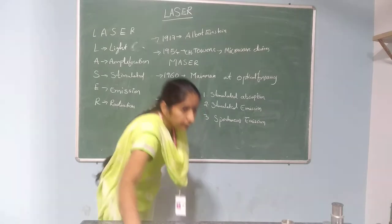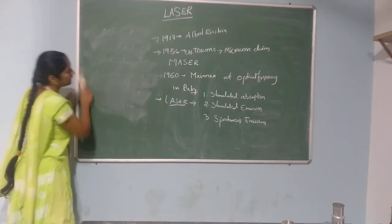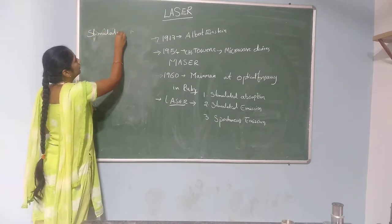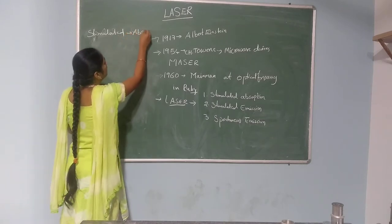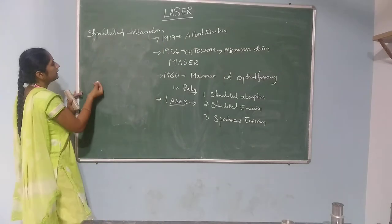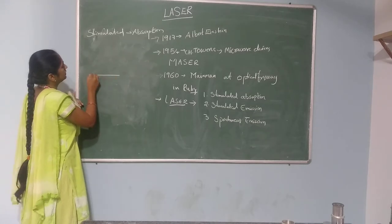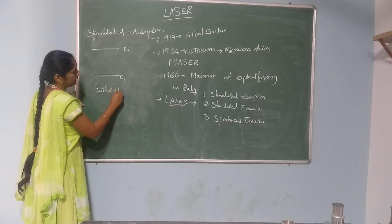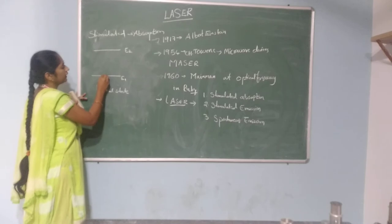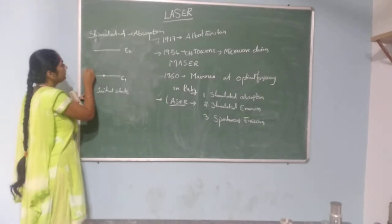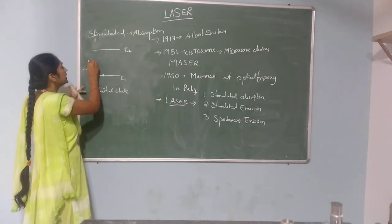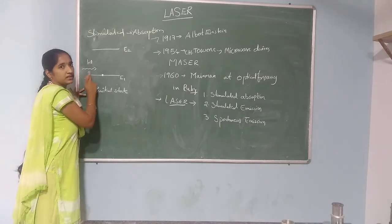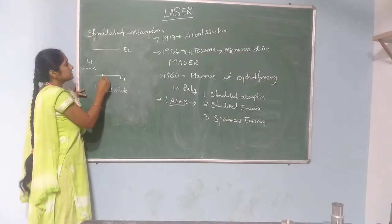Let us consider a two-level system with energy levels E1 and E2. In stimulated absorption, atoms are in the ground level state. We give photon energy H-nu, which equals E2 minus E1 — the difference between the two energy levels. The atoms absorb that energy and get excited to the higher energy level E2.